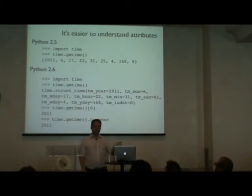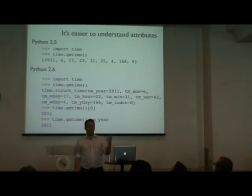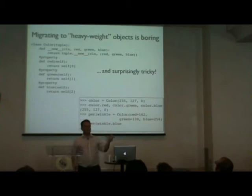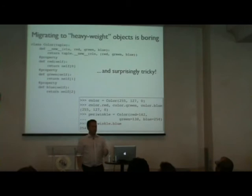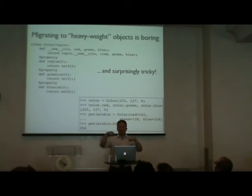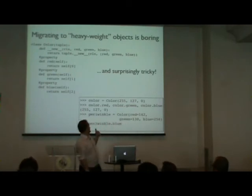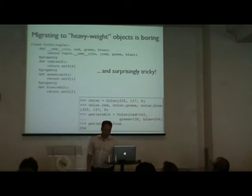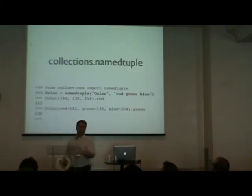What if you've been working with plain RGB tuples and want to migrate to named attributes? You could write a class that derives from tuple, implement __new__, add properties with decorators — but it's a nuisance. You have to use __new__ for immutable types, worry about __slots__ for memory savings, etc. Once done it works great, but it's a lot of boilerplate.